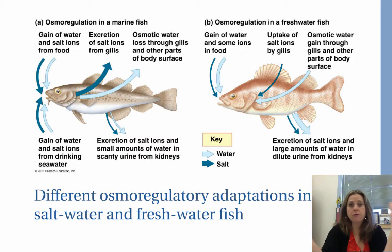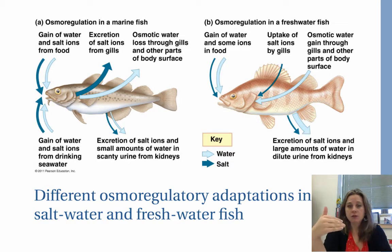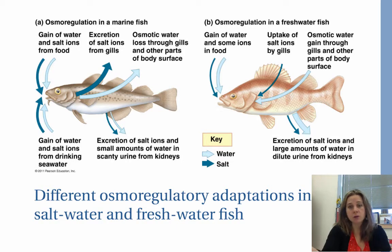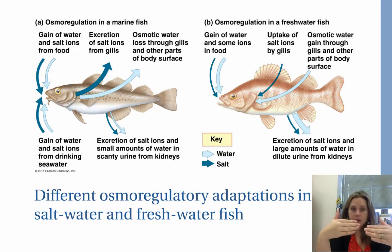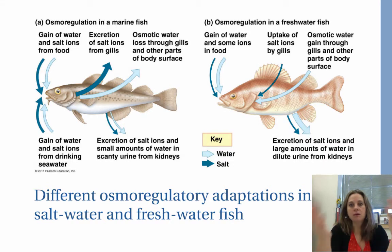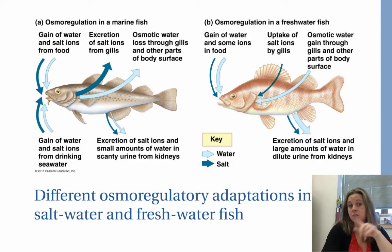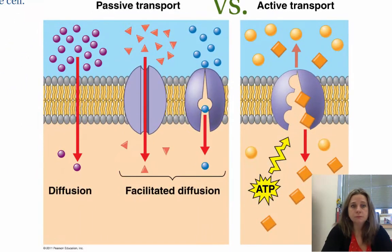In fish, depending on whether it's a freshwater or saltwater marine fish, you get different osmoregulatory adaptations. A saltwater fish lives in a more hypertonic solution while a freshwater fish lives in a more hypotonic solution, so each must regulate against losing too much water or taking on so much water that it bloats. You can pause here to read through how fish handle these adaptations.